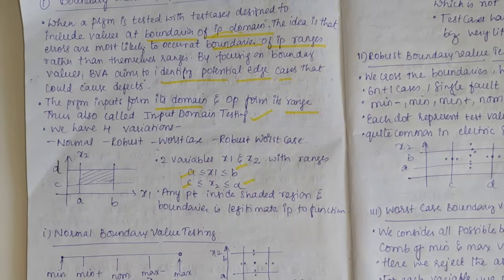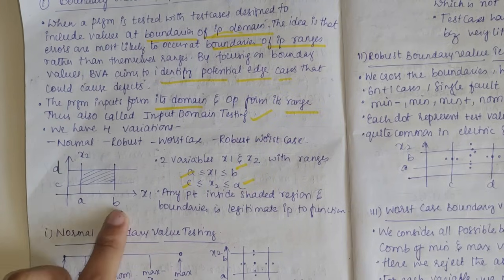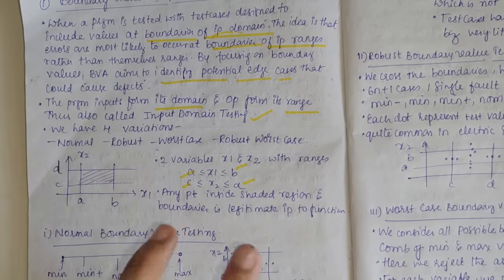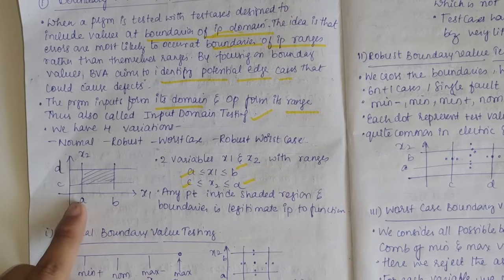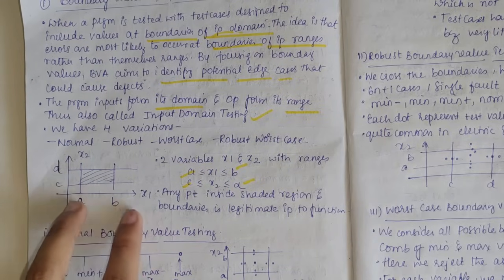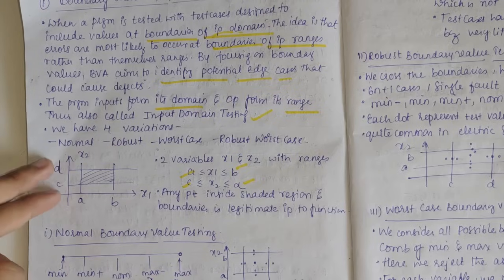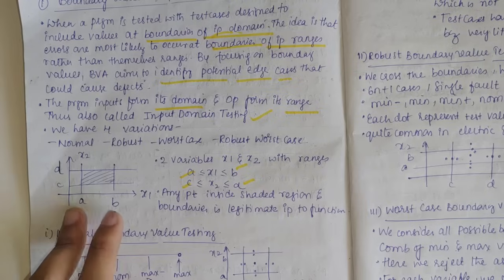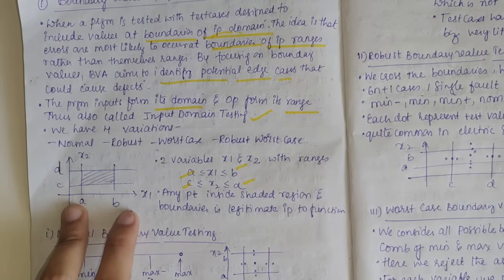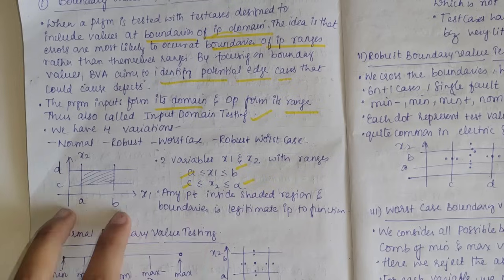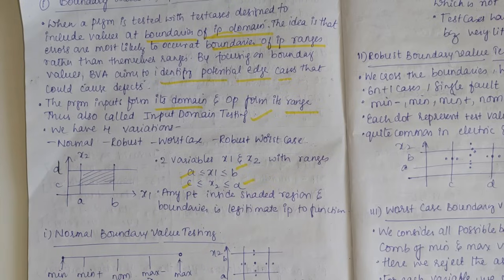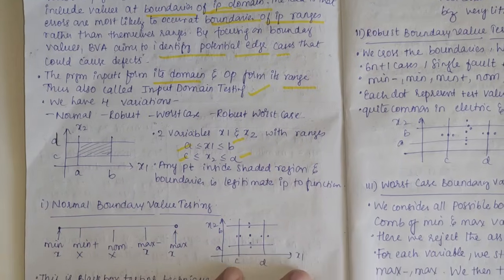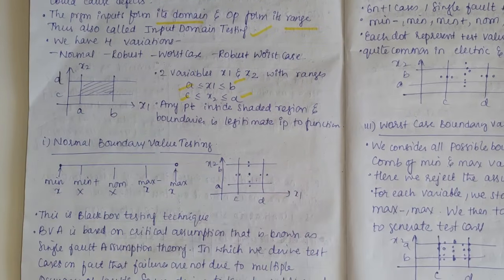Consider this graphical representation. We have X1 and X2 as two variables with A and B as the limits or range for X1 — X1 can start from A and end with B. X2 can be between C and D. For example, if A is 100 and B is 200, then X1 can lie between 100 and 200. A value like 150 is valid — any point inside the shaded region and on the boundaries is a legitimate input to the function.